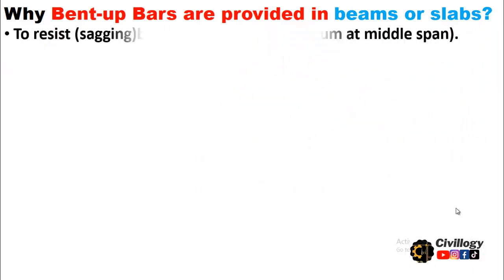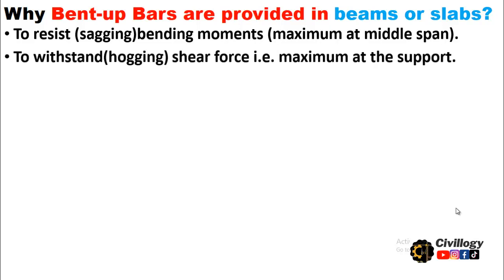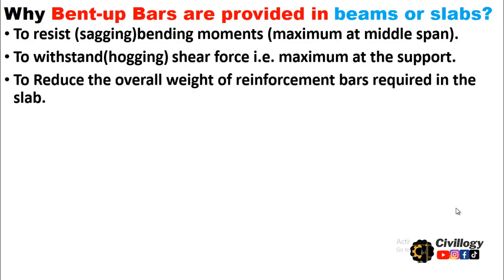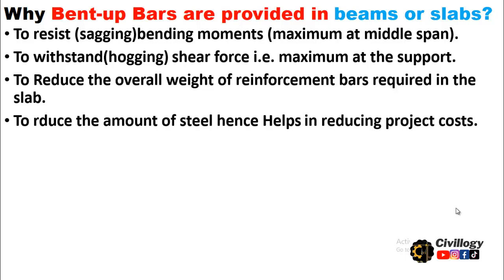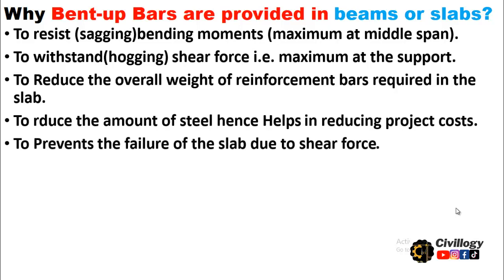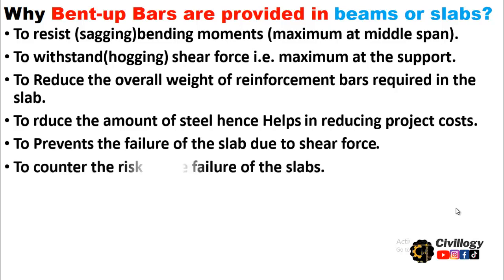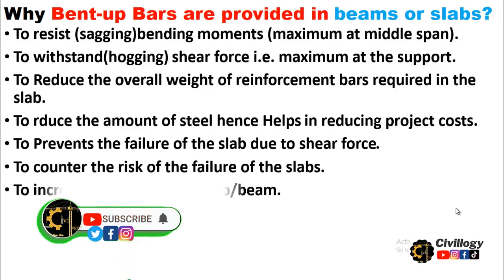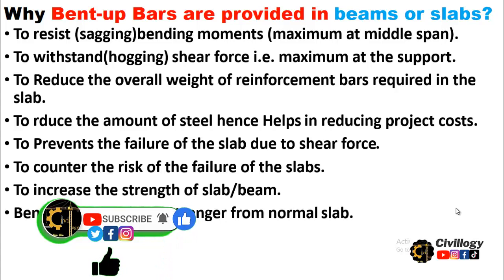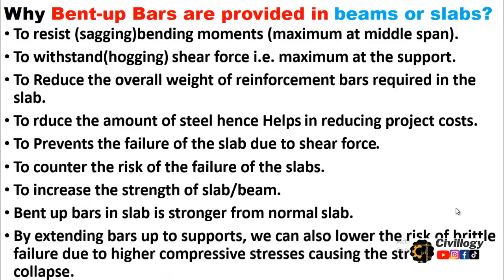Now let's discuss the purposes of bent up bars. First, bent up bars are provided to resist sagging bending moments which are maximum at the mid-span. They are also provided to withstand hogging and shear force that is maximum at the supports. They are provided to reduce the overall weight of reinforcement bars required in the slab, and to reduce the amount of steel, helping to reduce the project cost. They prevent failure of the slab due to shear force and increase the strength of the slab or beam. By extending bars up to the supports, we can also lower the risk of brittle failure due to higher compressive stresses that could cause the structure to collapse.